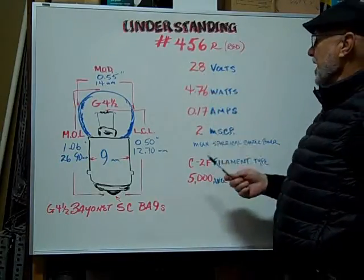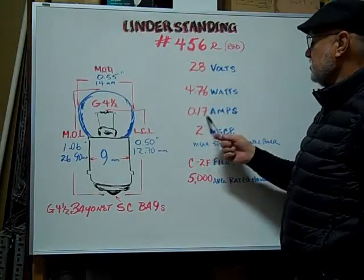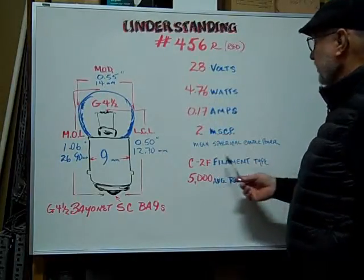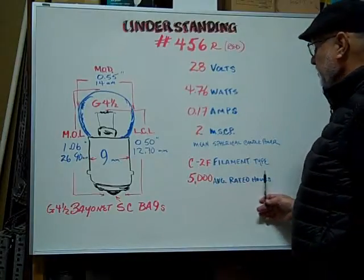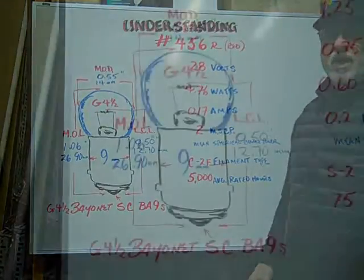Volts are rated at 28. The watts are 4.76. Amps are rated at 0.17. The mean spherical candle power is 2. The filament type is a C-2F. The average rated 100 hours or 5,000 hours.